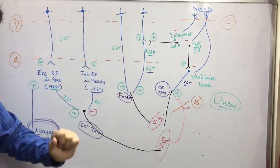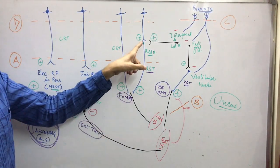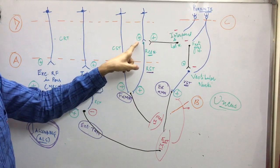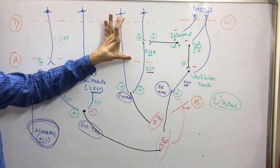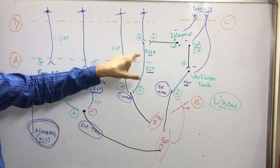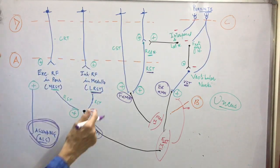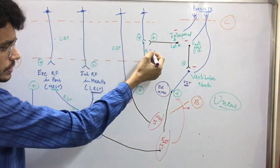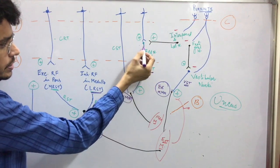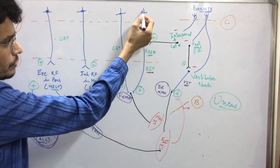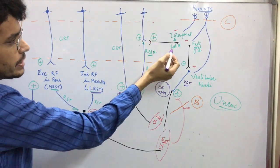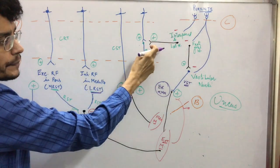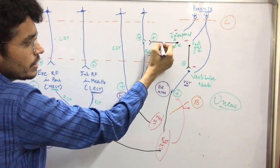Now coming to the rubrospinal tract: the rubrospinal tract starts from the red nucleus. The red nucleus is present within the midbrain — this entire part is the brain stem, specifically the midbrain part. The rubrospinal tract has control from the cerebral cortex as well as control from the cerebellum.